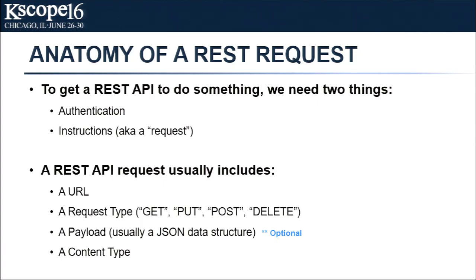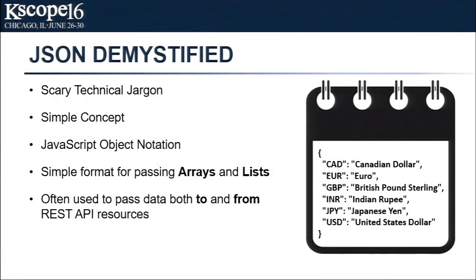JSON — when I started using the REST API, I thought I'd have to learn some cryptic technical thing. It is just a way to pass lists and arrays between websites. You'll know JSON when you see it: it's usually enclosed in curly brackets with text separated by colons and commas. It can get a little more complex with lists embedded within lists, but seriously, there's not much to it. JSON stands for JavaScript Object Notation, by the way.